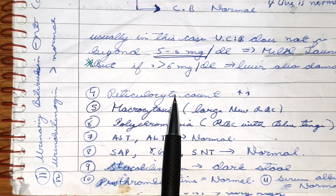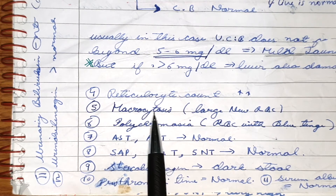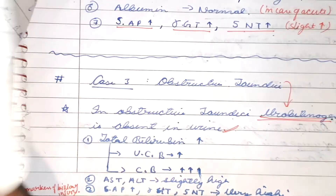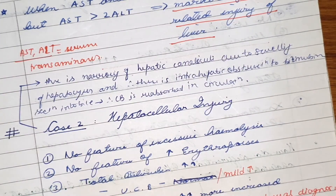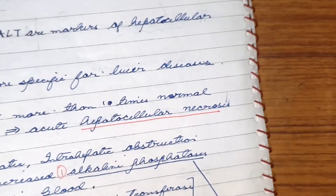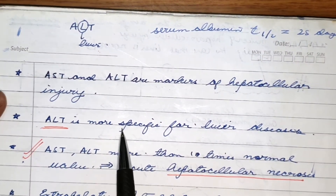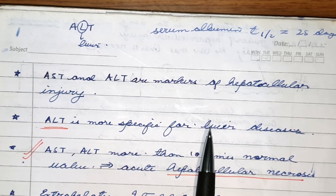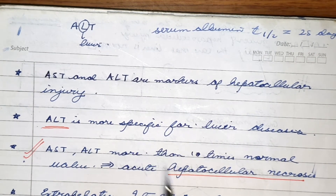In the pathway, conjugated bilirubin is converted into urobilinogen, which is taken up by the portal vein, goes to the liver, and then some reaches the blood and is filtered by the kidneys. Urobilinogen in urine is therefore increased.